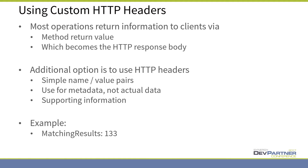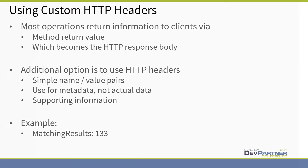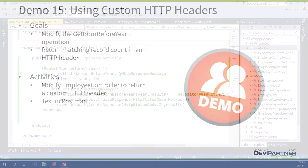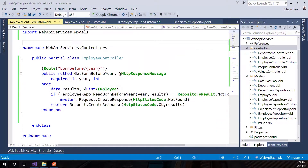The example I like to use is if I'm returning a collection of something, I find it useful to return how many are in the collection so that you know how many you're dealing with before you go and parse everything. So the example I'm going to use is to return a matching results header — whenever we're returning a collection of something, let's tell the client how many we're returning.